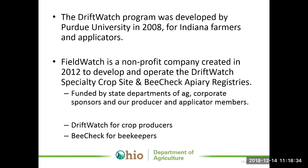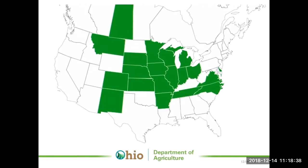They have two main programs: DriftWatch for crop producers and BeeCheck for beekeepers. At the end of the day it all goes to the same map, but they have slightly different tools and target audiences. This is a map of the states participating with FieldWatch. Ohio, Virginia, Maryland, and Indiana among others — a majority of the agricultural states in the Midwest are using the FieldWatch system. A real benefit is that if you're a pesticide applicator in Ohio, using the system gives you access to maps in Indiana, Michigan, and Illinois too — it's a one-stop shop for all the information you need if you're working in multiple states.